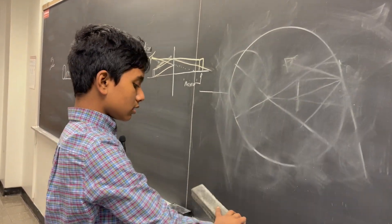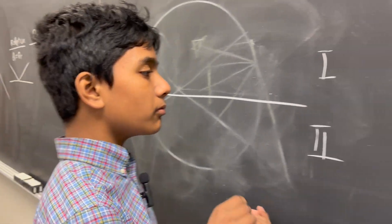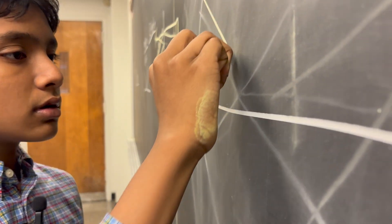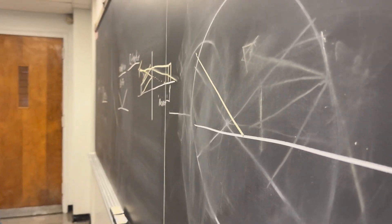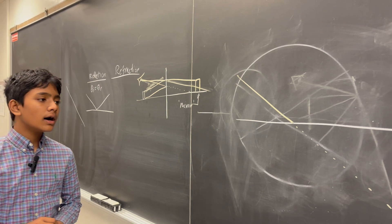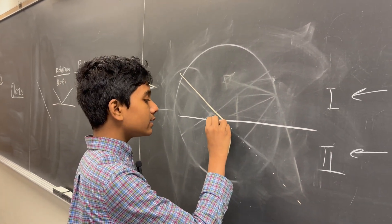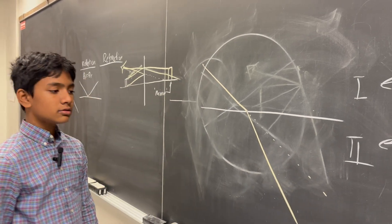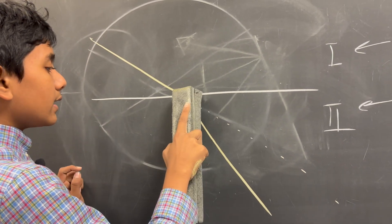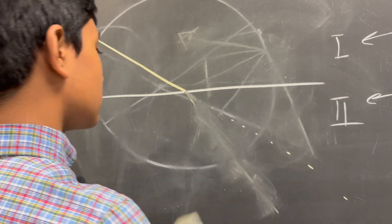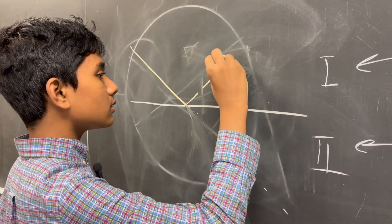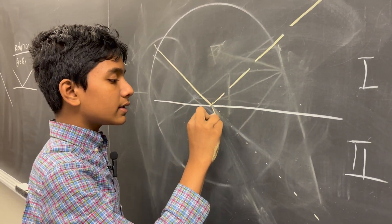Now let's talk about the other motion of light. We have light going from medium 1 to medium 2. Light traveling in this direction doesn't just continue in a straight line as it would traveling through the same medium the whole time — its path would actually be diverted. In actuality, it's a combination of two phenomena: a bit of the light gets reflected, while a bit of the light gets refracted.